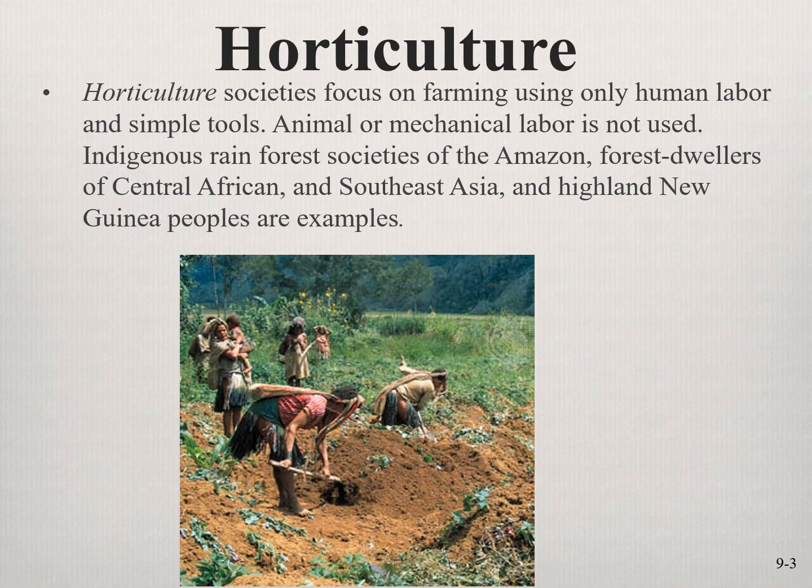Horticultural societies use human labor — they don't tie their pigs or other animals to plows. The farming is done with simple human labor: machetes and digging sticks. They live in rich areas where all you really have to do is put the plants in the ground, make sure animals don't eat them, and after a few months pull the plants out and process them into food.